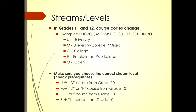Make sure you choose the correct stream level. As indicated at the bottom of this sheet, if you're selecting university level courses for next year, you should be coming out of the D course code — the academic level. If you are moving into college level classes, you would typically be moving out of the P, the applied level classes.